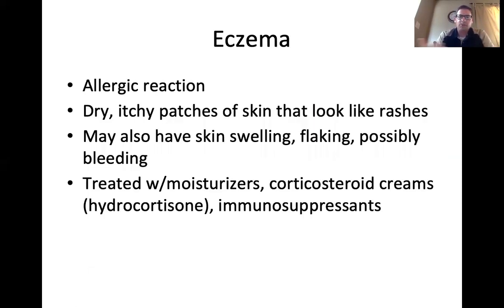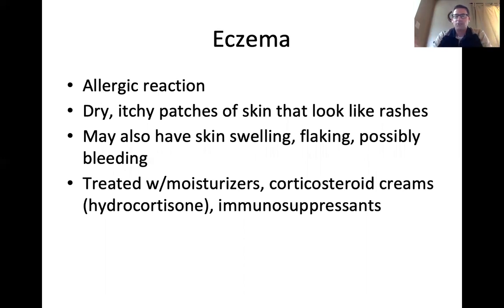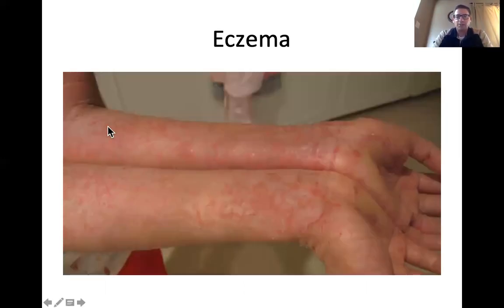Eczema is another disorder caused by an allergic reaction. You end up with dry, itchy patches of skin that look like rashes, and it's not localized to just the elbows and knees. You may also have skin swelling, flaking, and possibly bleeding depending on severity. It is treated with moisturizers, hydrocortisone, and immunosuppressants — drugs that suppress the immune system — because an allergic reaction is simply an overreaction of the immune system to something that's not actually harmful.